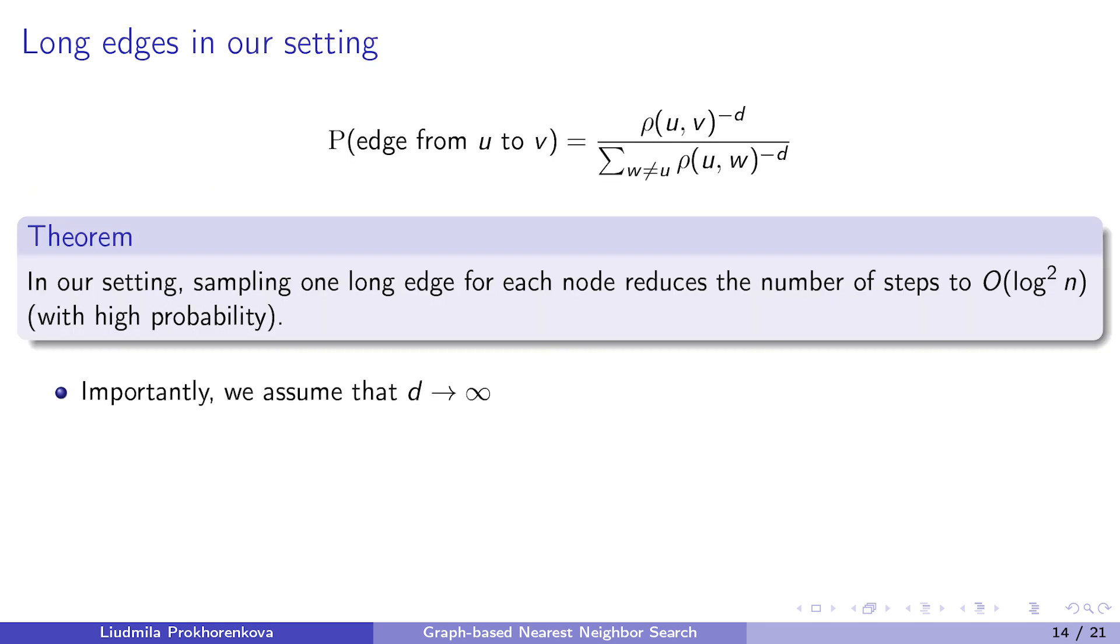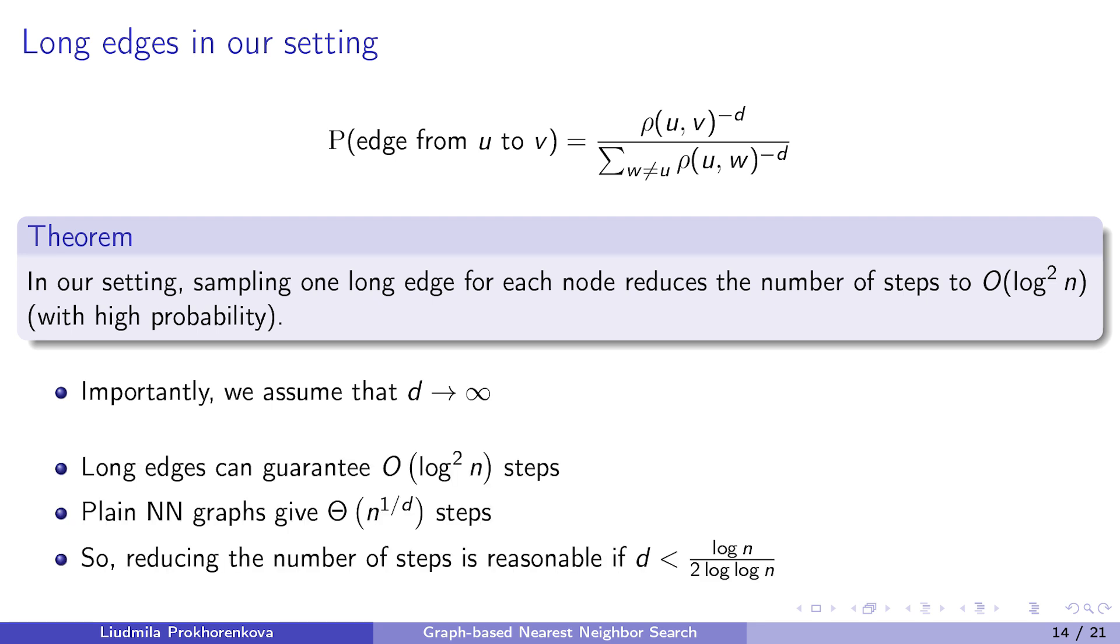Motivated by this result, we extended it to our setting. Namely, we assume that the points are uniformly distributed over a d-dimensional sphere, and importantly, we also assume that d tends to infinity. If the probability of an edge between two elements is proportional to the distance between them to the power of minus d, then the number of steps is log n squared. However, plain nearest-neighbor graphs give n to the power of 1 over d steps. Hence, reducing the number of steps is reasonable only if d is smaller than log n over 2 log log n.